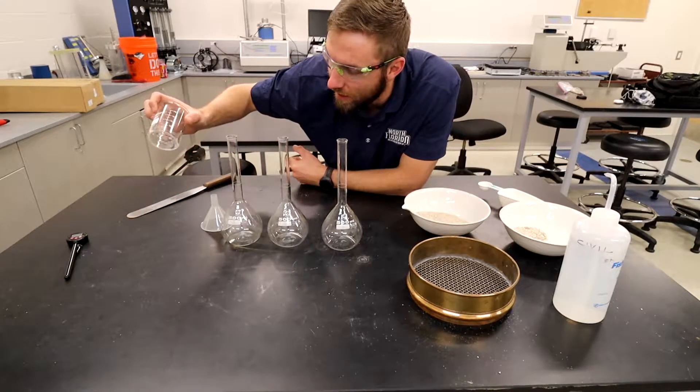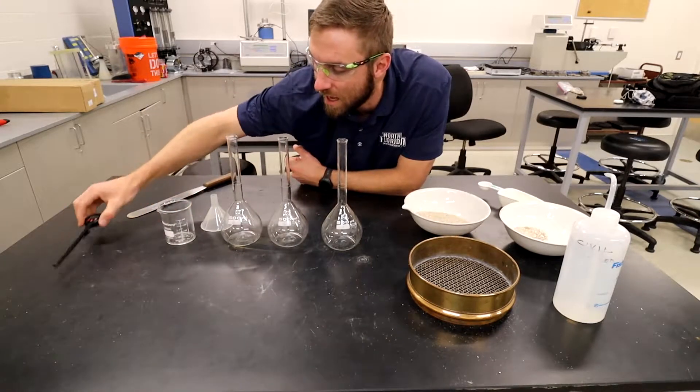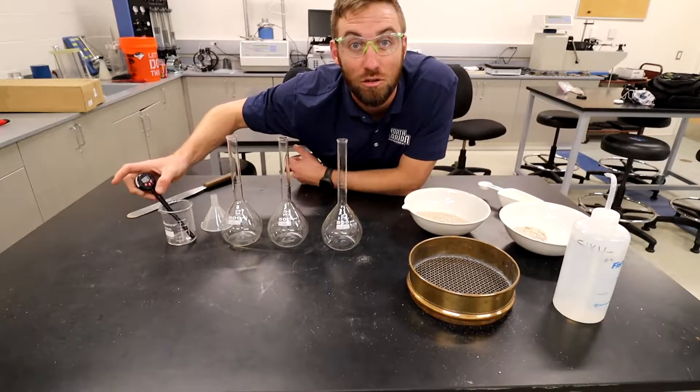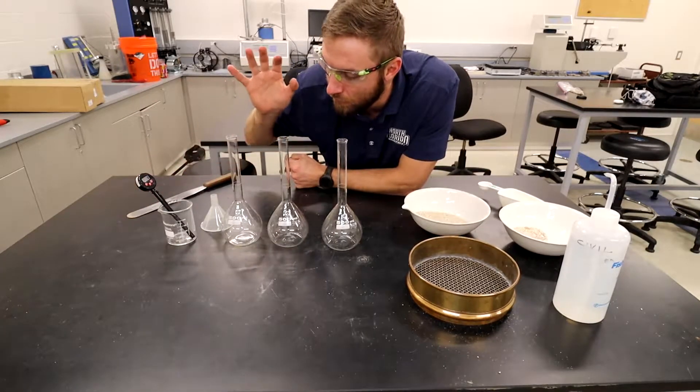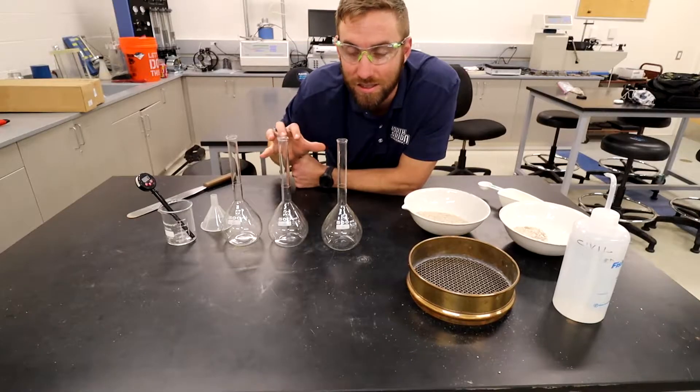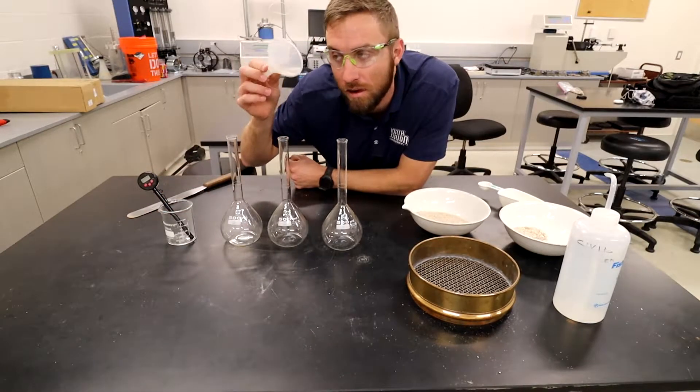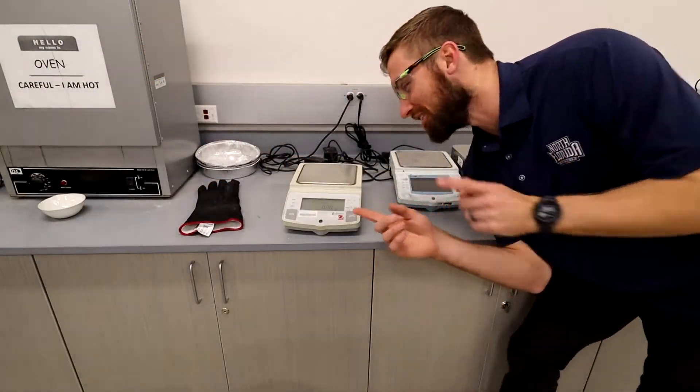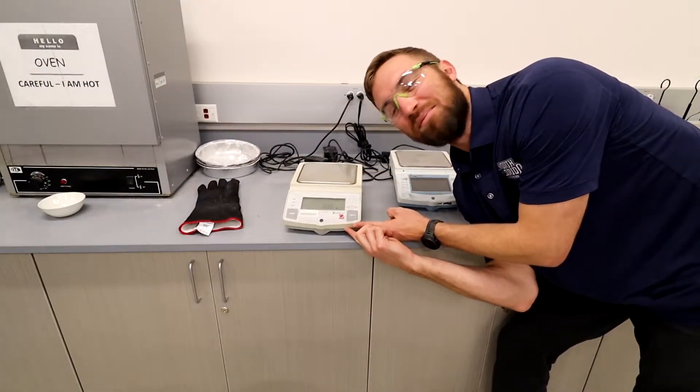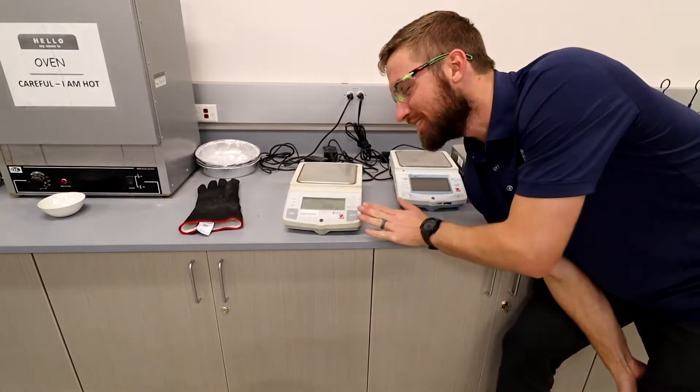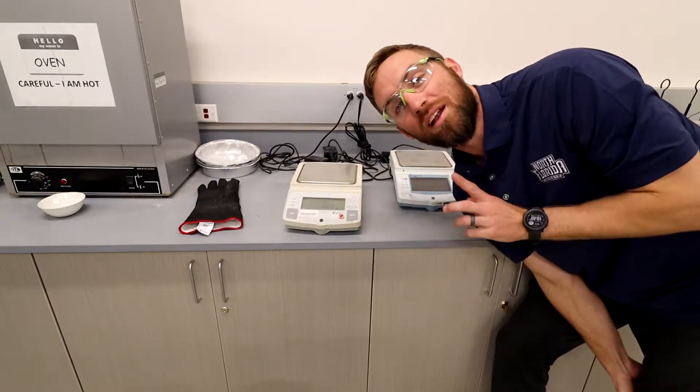We're also going to have another standard beaker to take the temperature of water because we're going to have to correct the specific gravity for 20 degrees Celsius. You'll see a chart in the procedures. We also have our funnel to fill the sample and our scales, same as last time, with a precision to .01 gram.